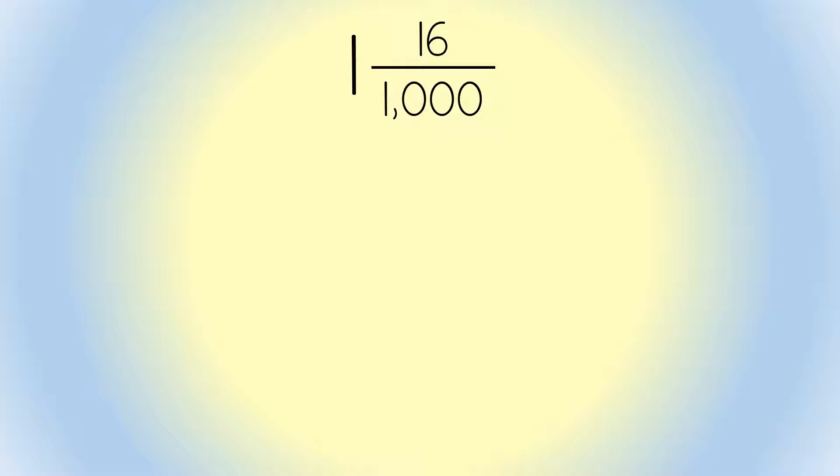Here is 1 and 16 thousandths written as a mixed number. You can expand this mixed number to better understand it.